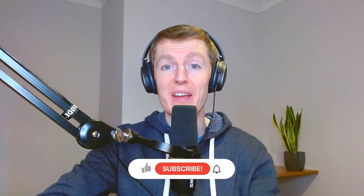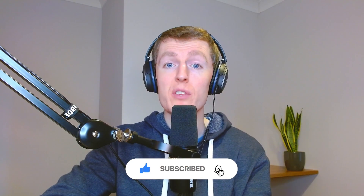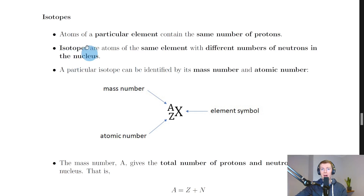Welcome back. In this video we're going to look at isotopes. It starts by saying that atoms of a particular element contain the same number of protons. Isotopes are atoms of the same element with different numbers of neutrons in the nucleus.